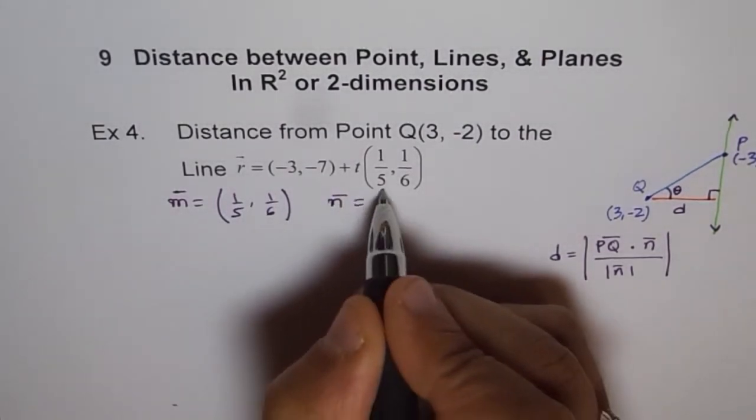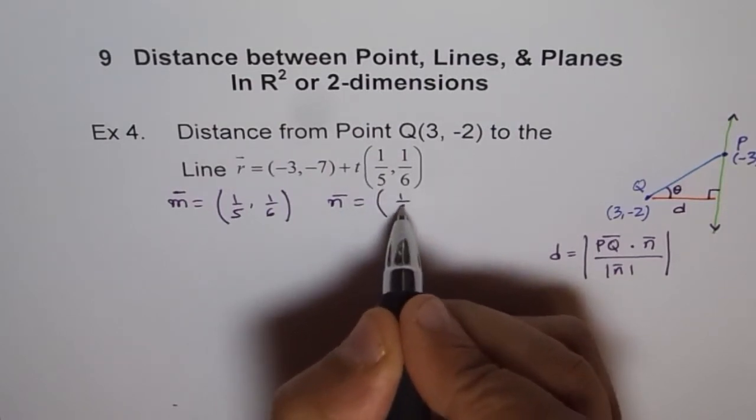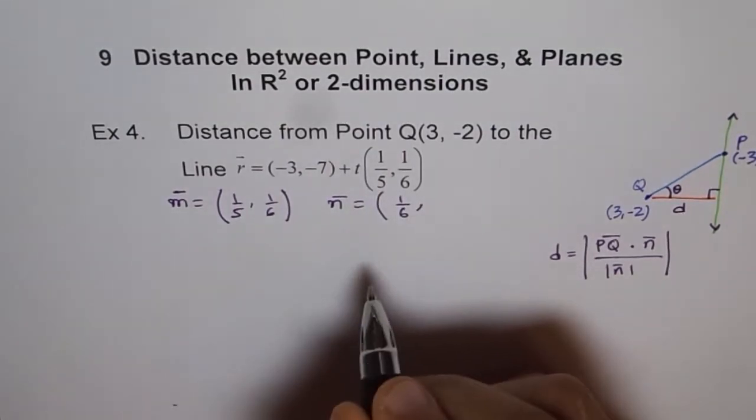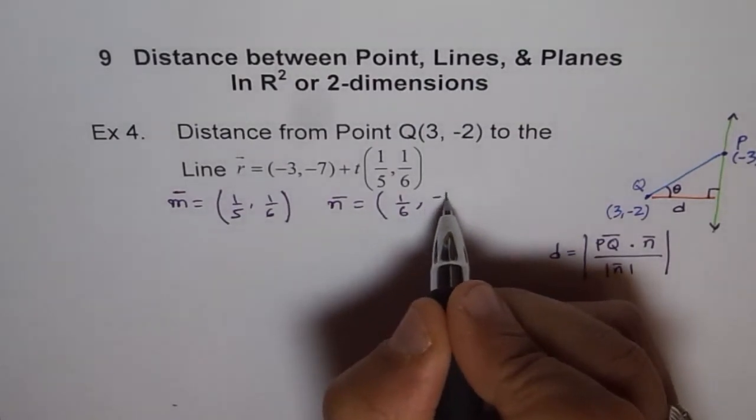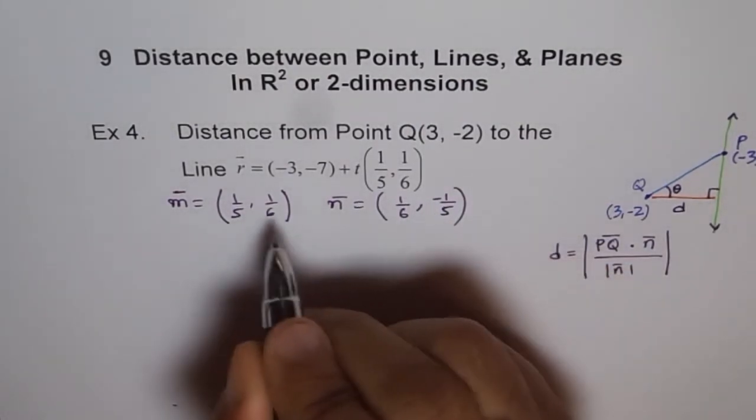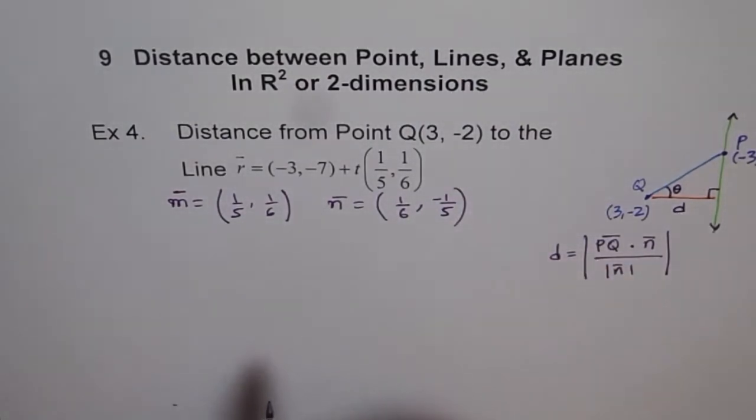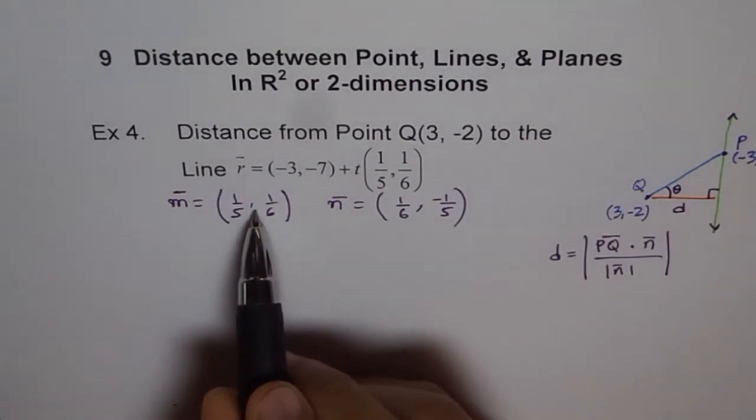The normal should be—we will interchange the position, that's the best way to find it, and make one of them negative. Let's make this negative, that becomes the normal. You can check: if you do the dot product of these two, you will get zero.